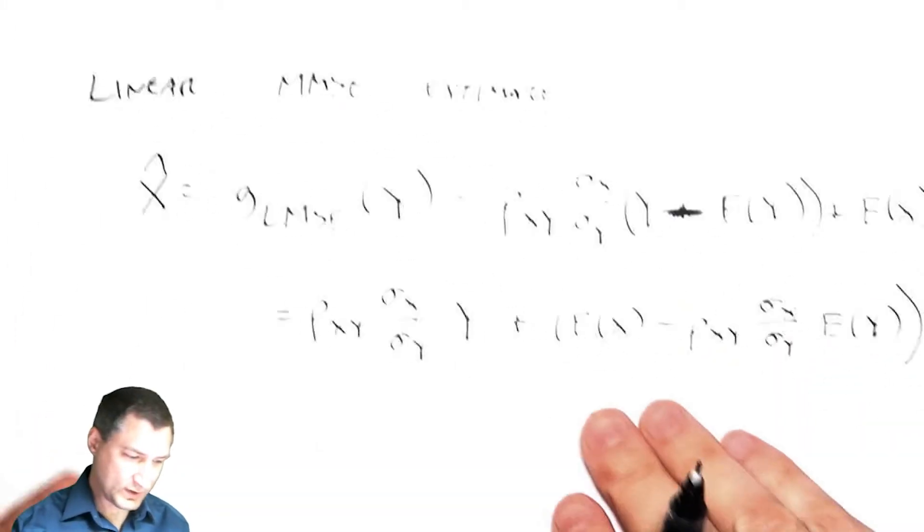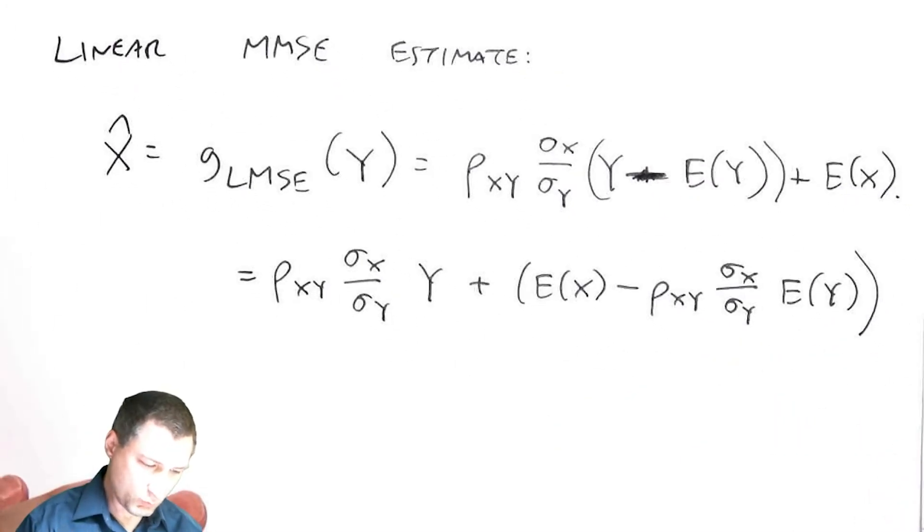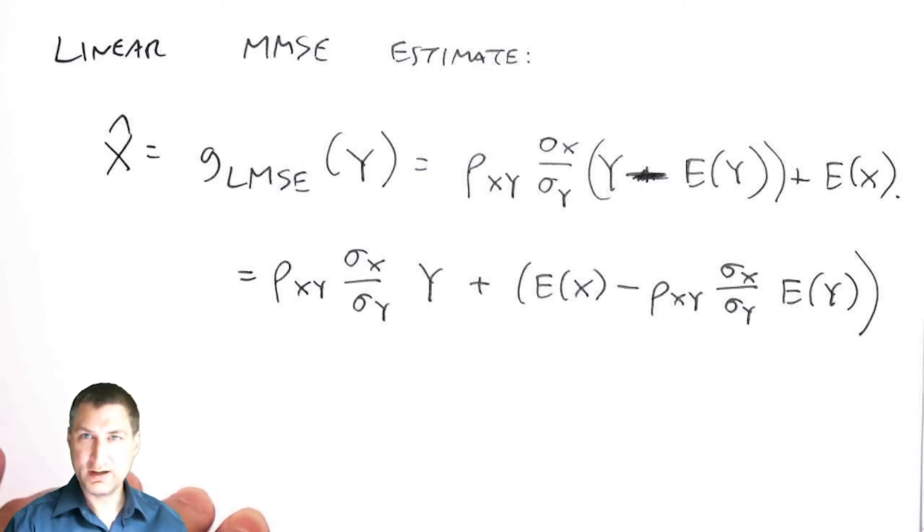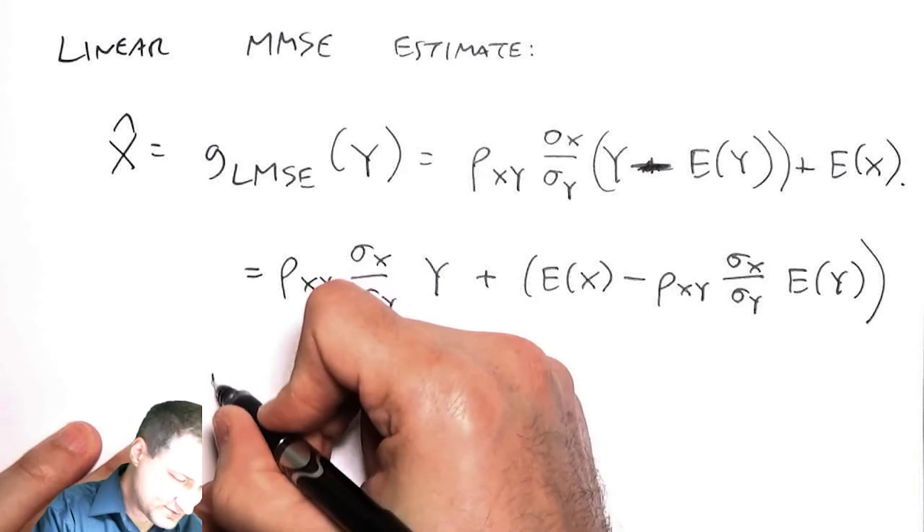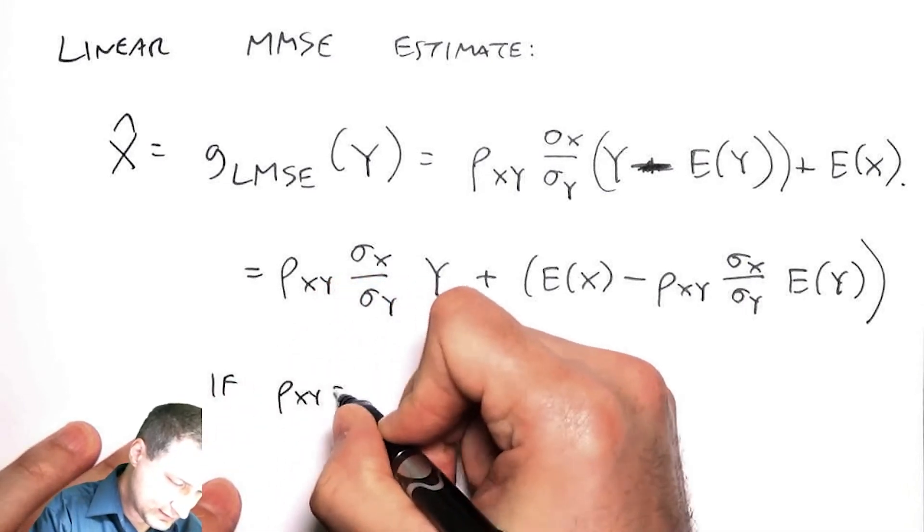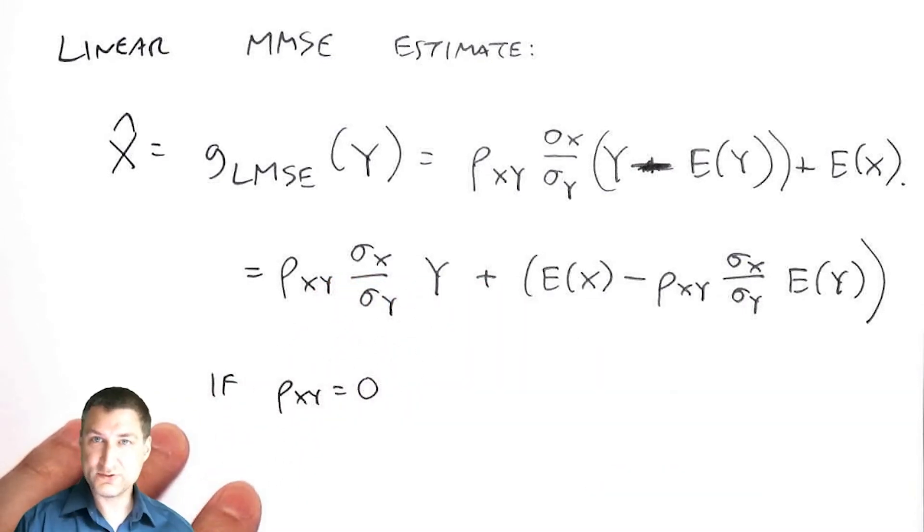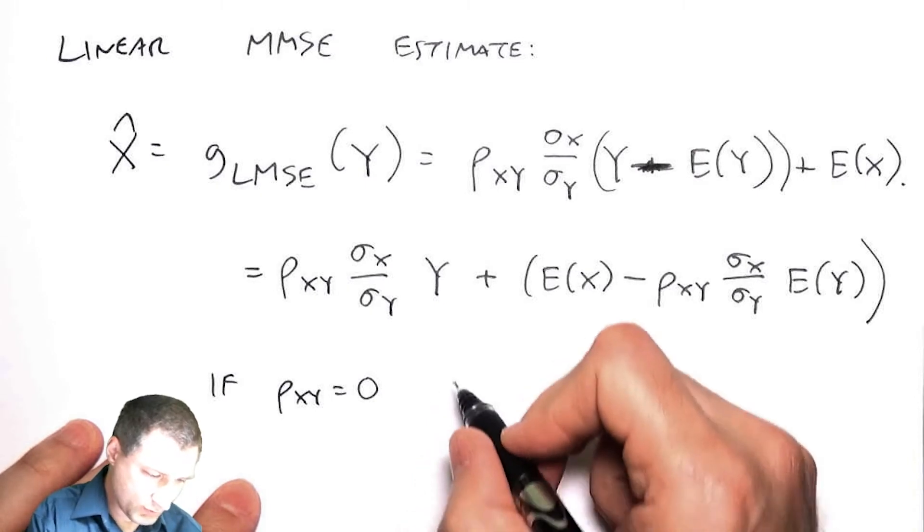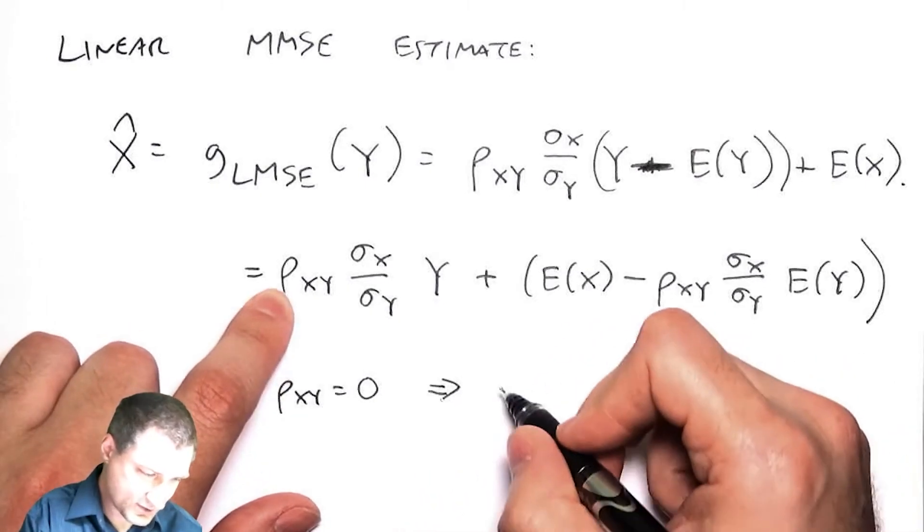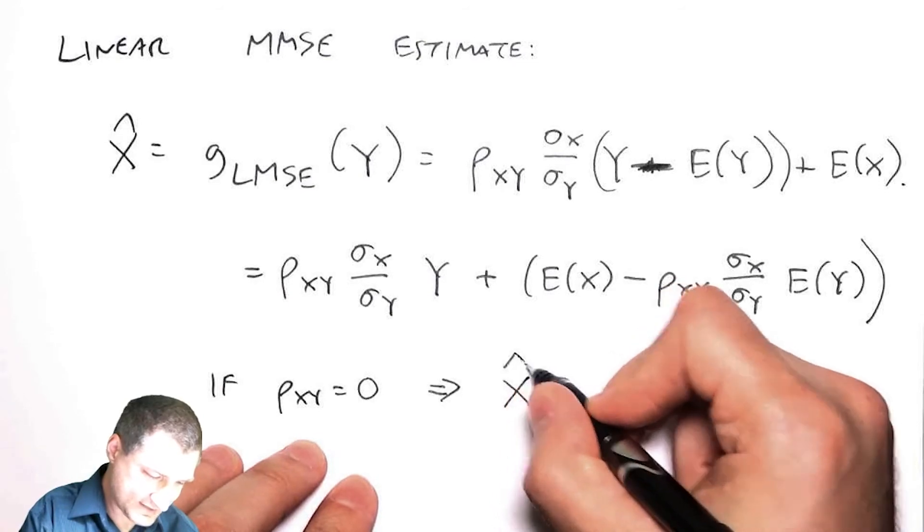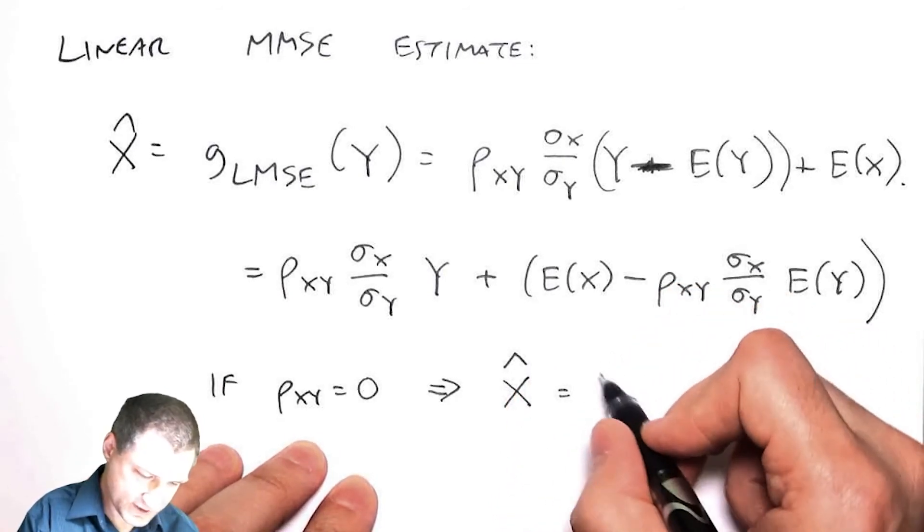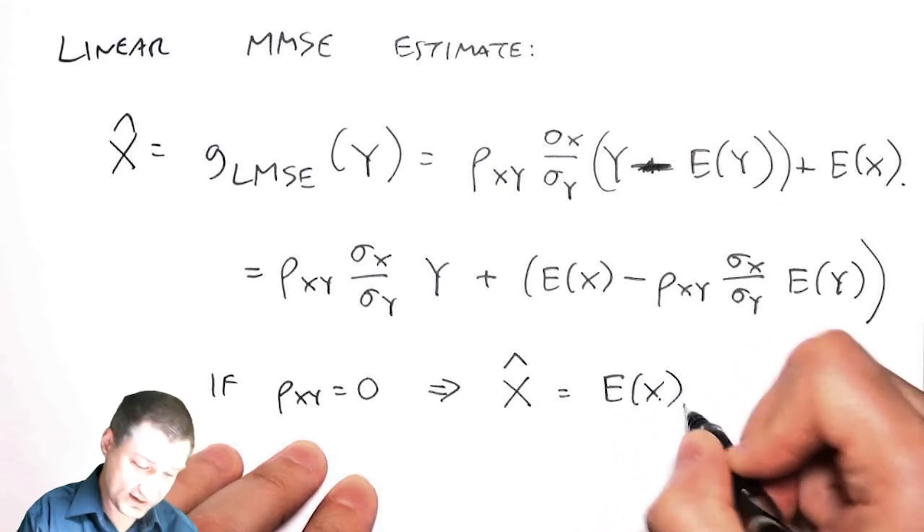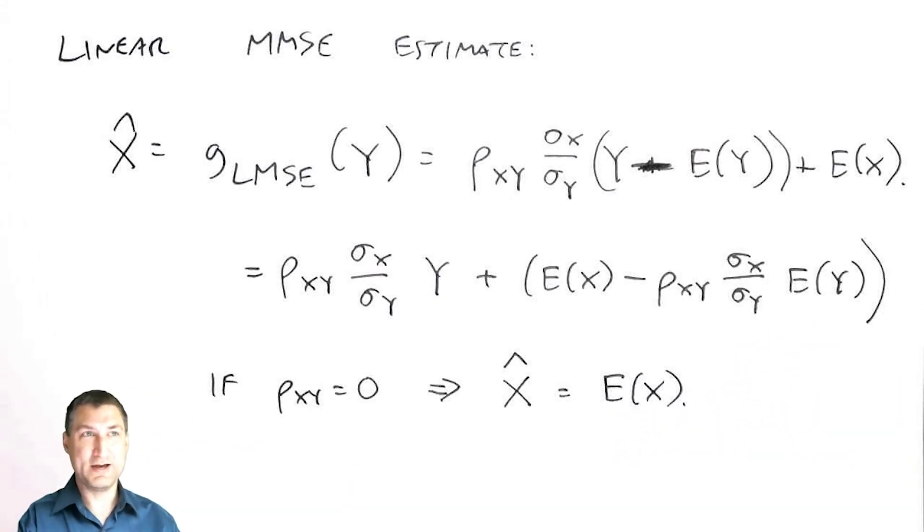So let me go back to this for one second and say okay, what if X and Y were uncorrelated? Let's suppose that if ρ_XY = 0, then what would I have? Then this would be zero, this would be zero, and my X̂ would just be E(X).